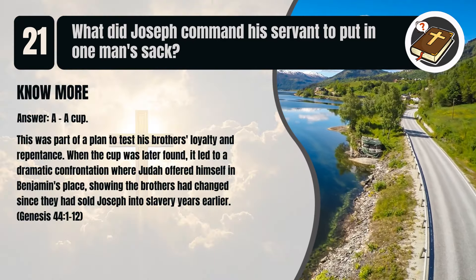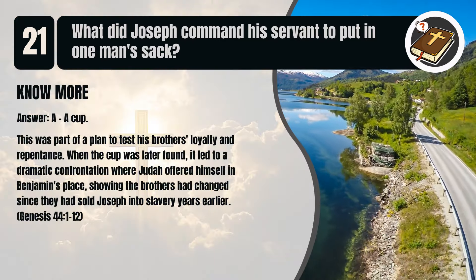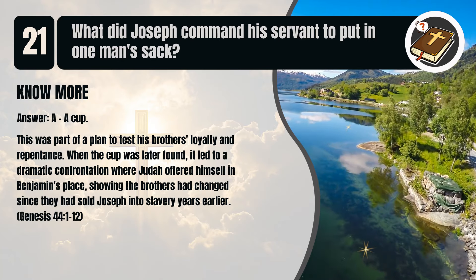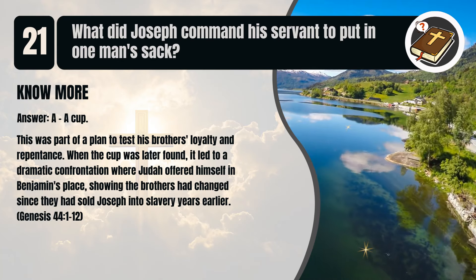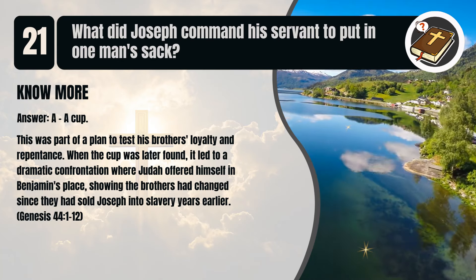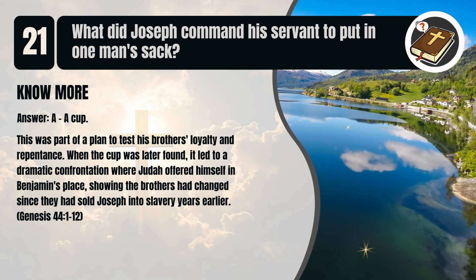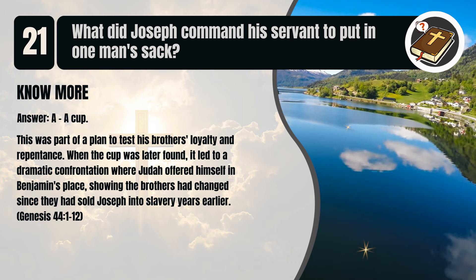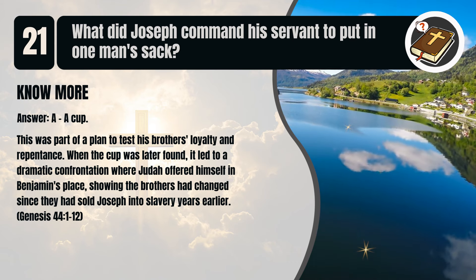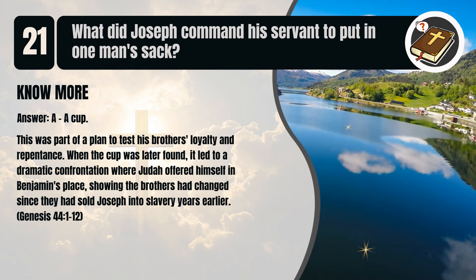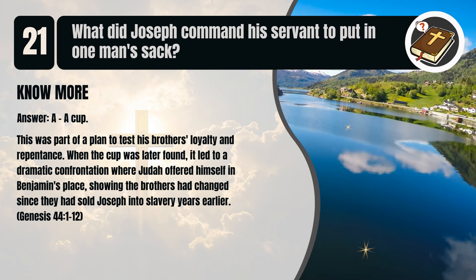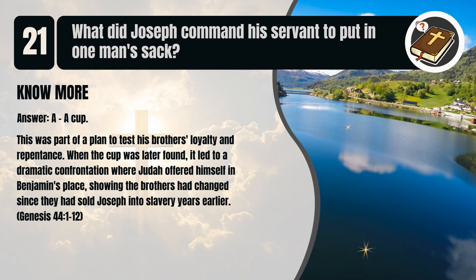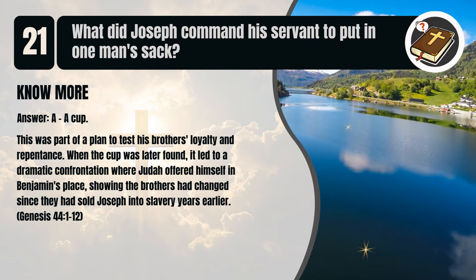That's A. A cup. This was part of a plan to test his brothers' loyalty and repentance. When the cup was later found, it led to a dramatic confrontation where Judah offered himself in Benjamin's place, showing the brothers had changed since they had sold Joseph into slavery years earlier. Genesis chapter 44 verses 1 to 12.